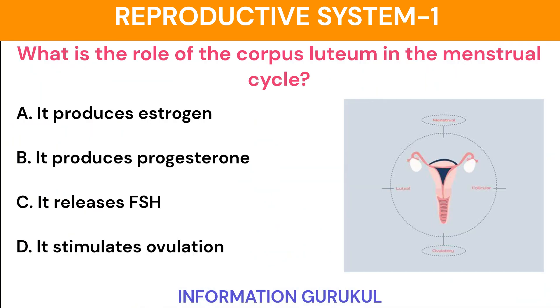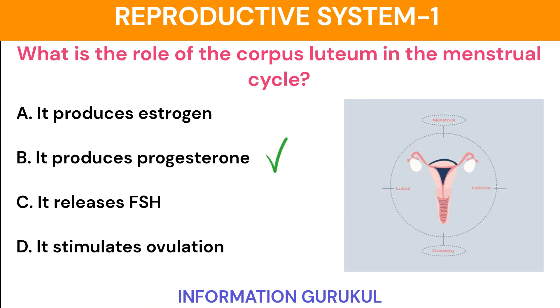What is the role of the corpus luteum in the menstrual cycle? It produces progesterone.